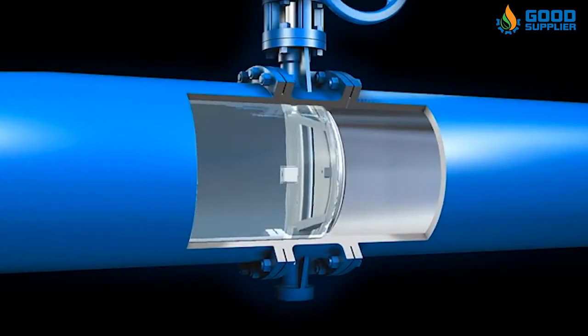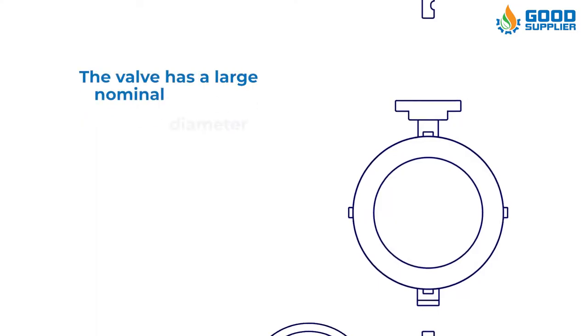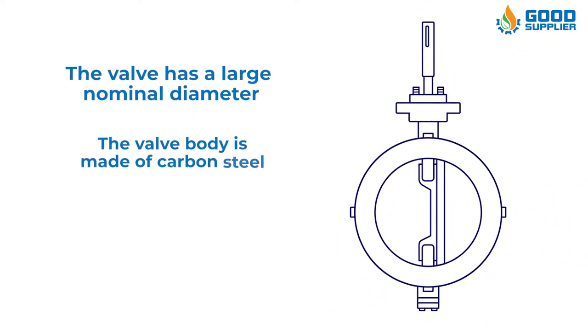The characteristics of the industrial special butterfly valve: can withstand high temperature, the applicable pressure range is also high, the valve has a large nominal diameter, and the valve body is made of carbon steel.